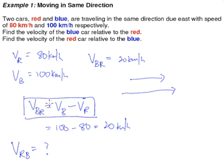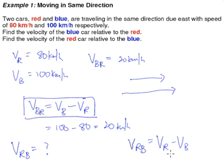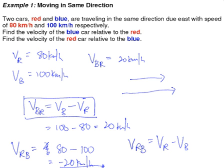Using the formula: the velocity of the red car relative to the blue car, VRB, equals the velocity of the red car minus the velocity of the blue car. So where VBR = VB − VR, VRB = VR − VB. Therefore VRB = 80 − 100 = −20 km/h. As seen in the animation, this is precisely what is happening when you are in the blue car and you see yourself overtaking the red car. I hope you are okay with this and we can move on to the next example.